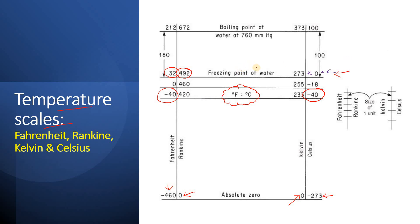At 100 degree Celsius when water boils on the relative scale, that is equivalent to 373 Kelvin, 672 degree Rankine and 212 degree Fahrenheit. If you look at the degree Fahrenheit scale, from 32 to 212 there are 180 points. From 0 degree Celsius to 100 degree Celsius there are 100 points. Similarly from 273 to 373 Kelvin there are also 100 points.